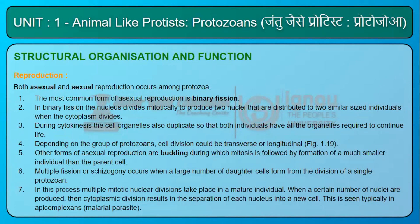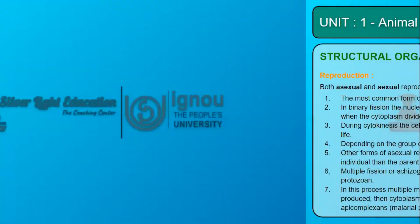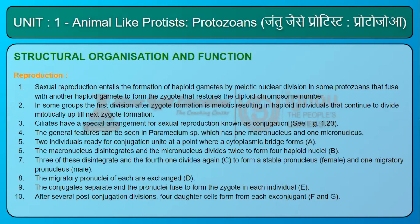Reproduction: Both asexual and sexual reproduction occur among protozoa. The most common form of asexual reproduction is binary fission, in which the nucleus divides mitotically to produce two nuclei distributed to two similar-sized individuals when the cytoplasm divides. Cell division may be transverse or longitudinal depending on the group. Other forms include budding — where mitosis is followed by formation of a much smaller individual — and multiple fission or schizogony, in which a large number of daughter cells form from a single protozoan through multiple mitotic nuclear divisions followed by cytoplasmic division. This is typically seen in apicomplexans.